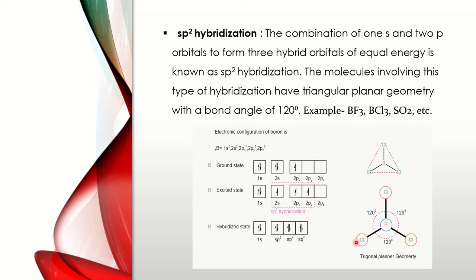Next, SP2 hybridization. The combination of 1S and 2P orbitals to form 3 hybrid orbitals of equal energy is known as SP2 hybridization. The molecules involving this type of hybridization have triangular planar geometry with a bond angle of 120 degrees. Examples include BF3, BCL3, SO2, etc.